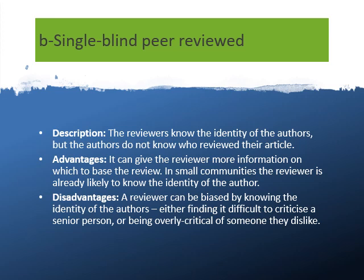The second type is single blind peer review. Here the reviewer knows the identity of the author — they know your name — but you don't know who they are. This can give the reviewer information on which to base their review. The disadvantage, however, is that there may be bias: by knowing the identity of the author, the reviewer may dislike you and give you bad criticism.